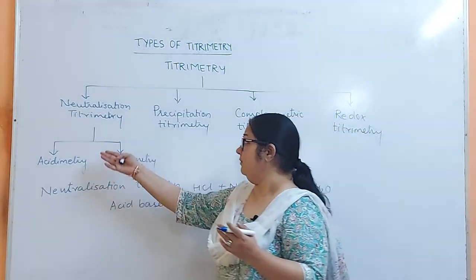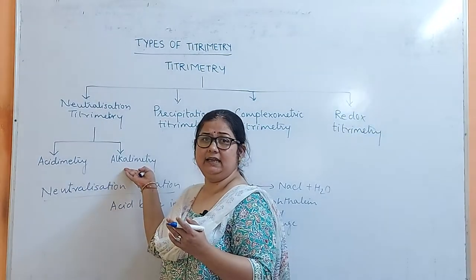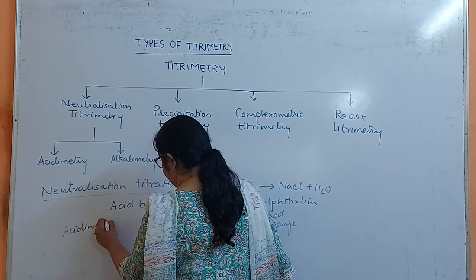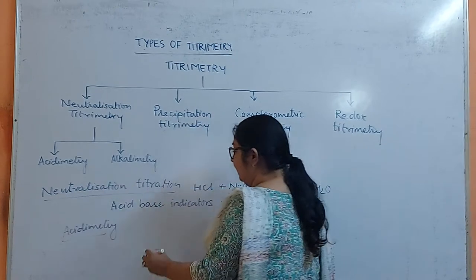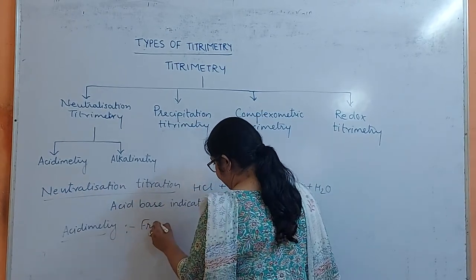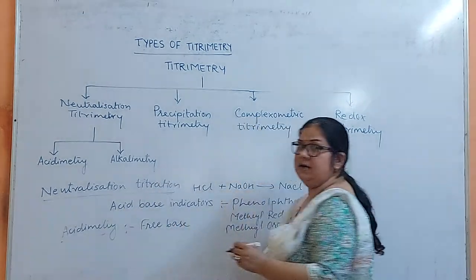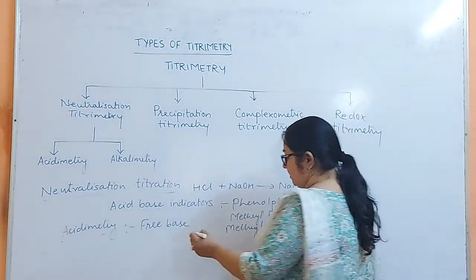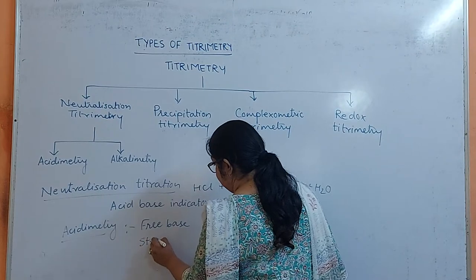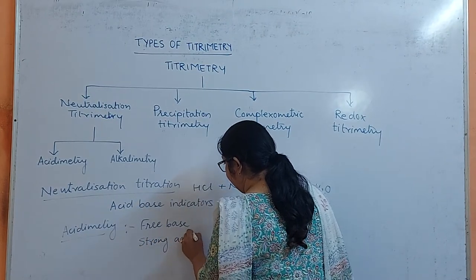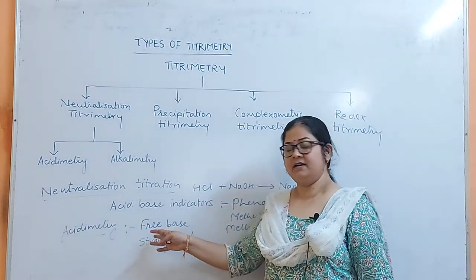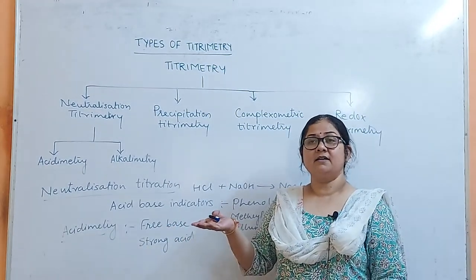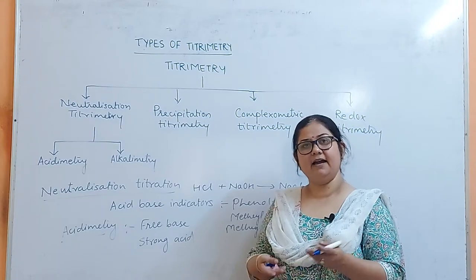Now, what is acidimetry and what is alkalimetry? Acidimetry is the titration of free base, or those formed from the salt of a weak acid by hydrolysis, with strong acid. It means it is the titration of free base with strong acid. You can also get free base from the salt of a weak acid by hydrolysis.